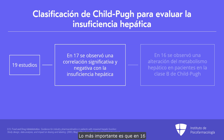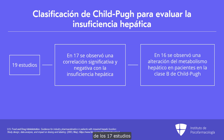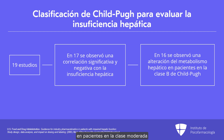Most importantly, 16 of the 17 studies showed impaired hepatic metabolism in patients with the moderate Child-Pugh category, which is Child-Pugh B.